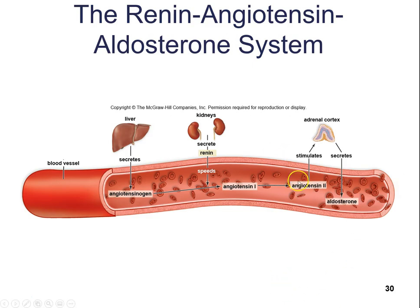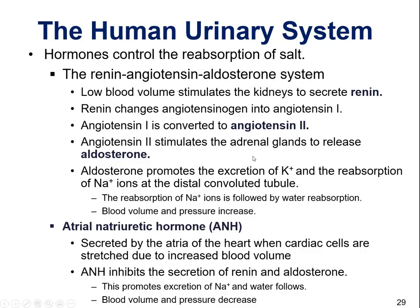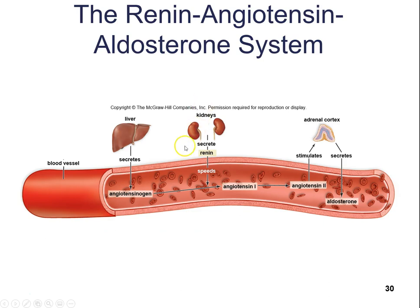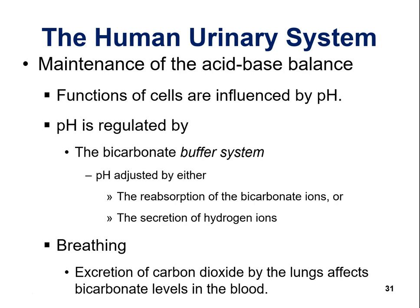The RAAS diagram shows that the kidneys secrete renin in response to low blood volume. You don't need to know all steps of this pathway, but you should know: what happens when the body detects low blood volume (RAAS is activated), and that atrial natriuretic hormone decreases blood volume and blood pressure in response to high blood volume.